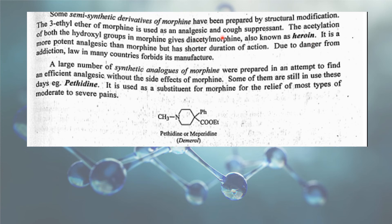Heroin is called diacetylated morphine. Codeine, heroin, and morphine all fall under the category of narcotic analgesics, which are used in cases of severe pain. These drugs cause addiction and require a doctor's prescription.